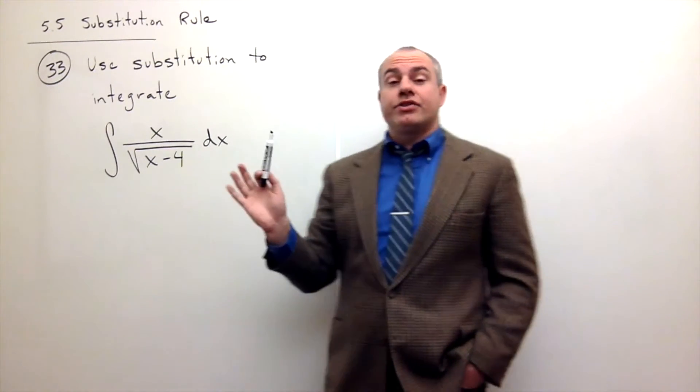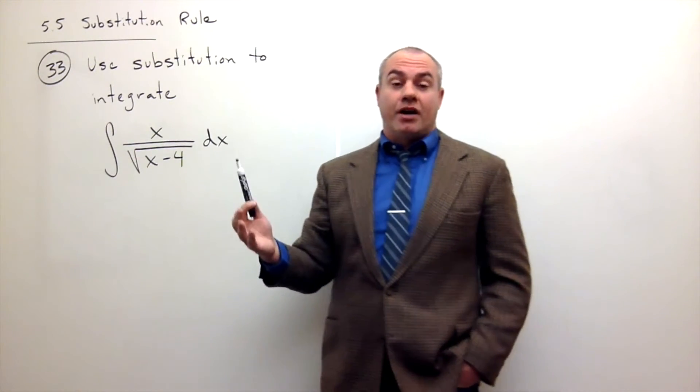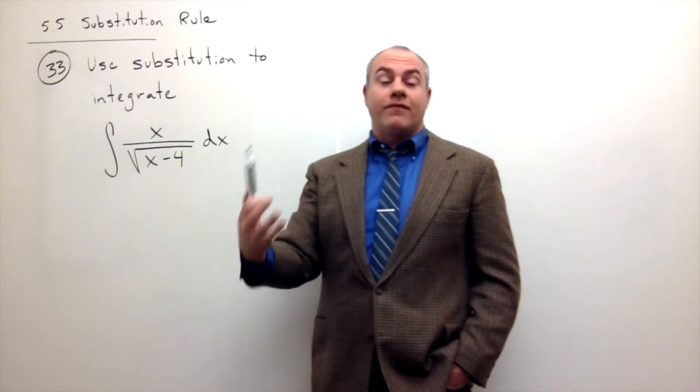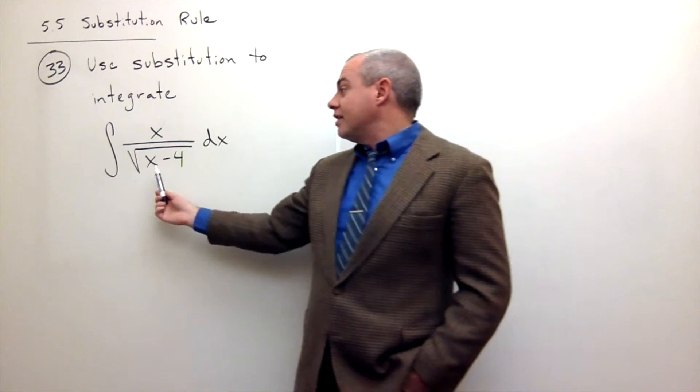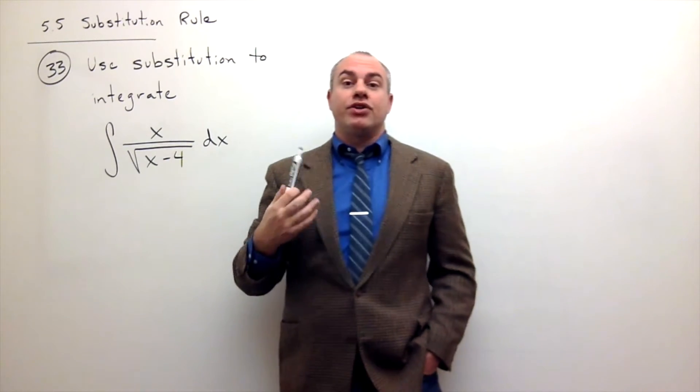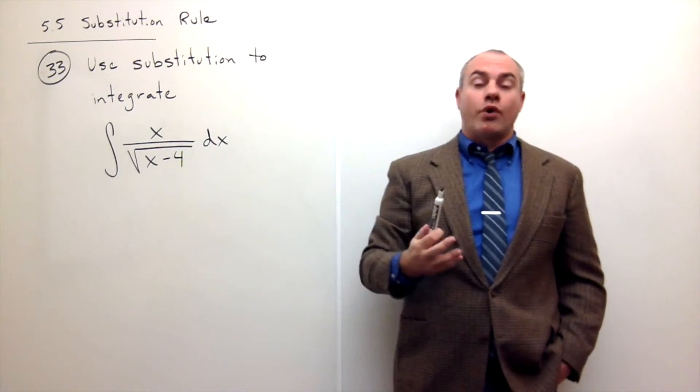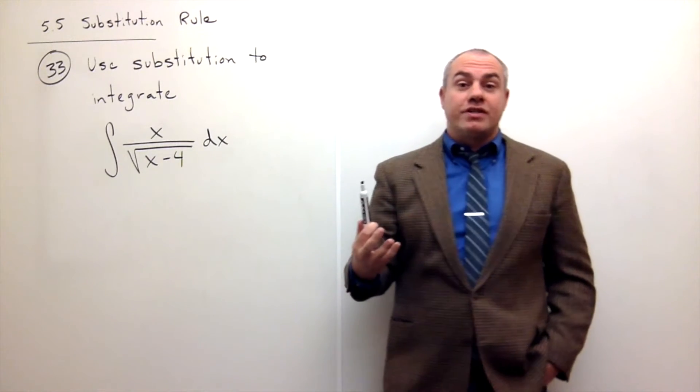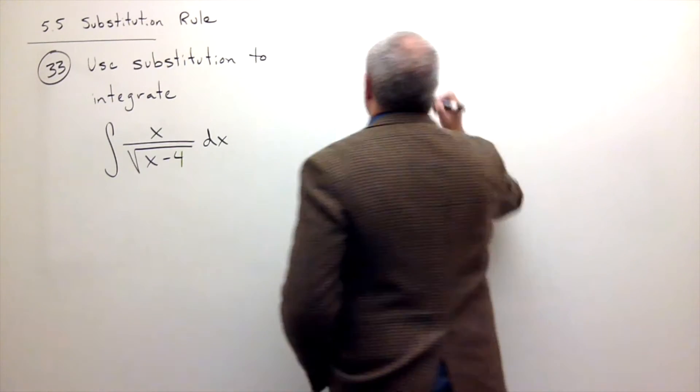I think there's a clear choice for our u here. Is there a function within a function? Yes, there is. There's an x minus 4 inside of a square root. So I think u equals x minus 4 is the obvious choice for our u-substitution.